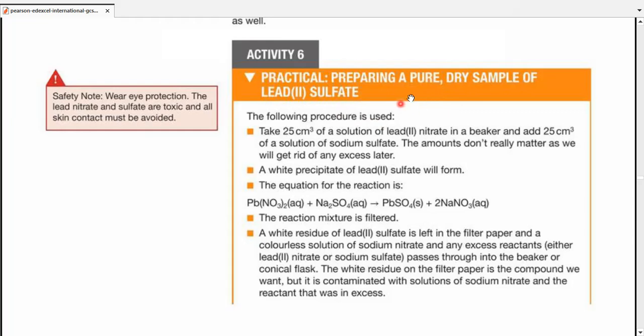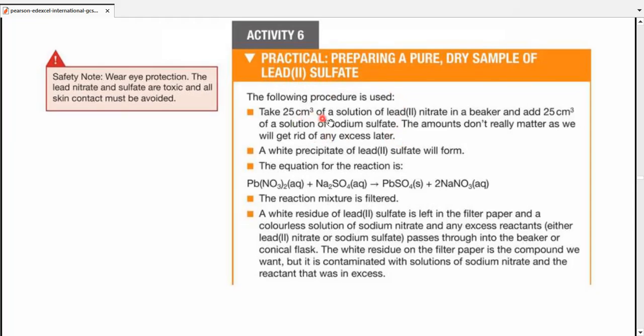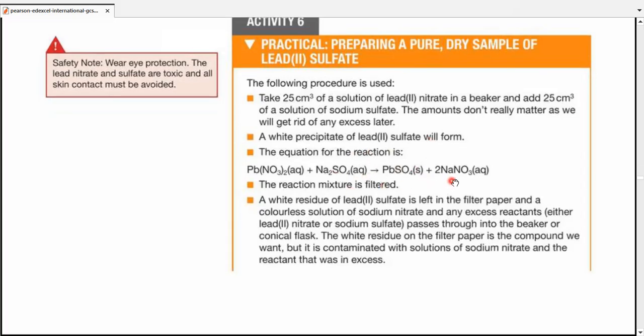Let's go for a practical activity where we are supposed to prepare a pure dry sample of lead(II) sulfate. We are going to take 25 cubic centimeters of lead(II) nitrate in a beaker and another separate part, take a solution of sodium sulfate, the same amount. Amounts don't really matter, as we will get rid of any excess later. A white precipitate of lead(II) sulfate would form. The equation for the reaction is Pb(NO₃)₂(aq) + Na₂SO₄(aq) → PbSO₄(s) + 2NaNO₃(aq). The reaction mixture is filtered. A white residue of lead(II) sulfate is left on the filter paper. A colorless solution of sodium nitrate and water or any excess reactants passes through into the beaker in the conical flask.